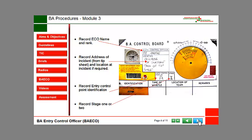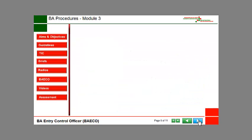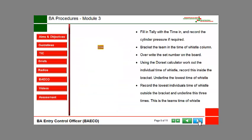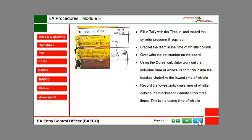Record Stage 1 or 2. Record the present and next hour on the Dorset Calculator. Fill in the tally with the time in and record the cylinder pressure if required. Bracket the team in the Time of Whistle column. Overwrite the set number on the board.